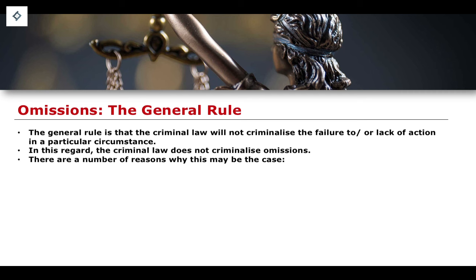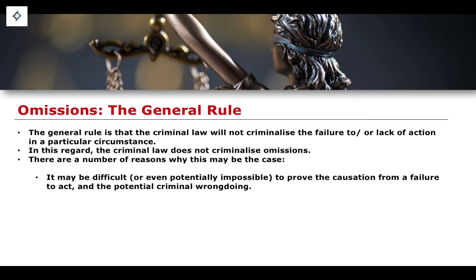There are a number of reasons why criminal law should not perform an overarching criminalization of the failure to act. In some circumstances it may be difficult, nigh on impossible, to even prove causation. When we think about an act itself, there's a more clearly established causal link between the act committed and the crime identified. But with an omission, it's more difficult. If it's difficult to prove causation from a failure to act, then it is therefore difficult to prove any kind of criminal wrongdoing.